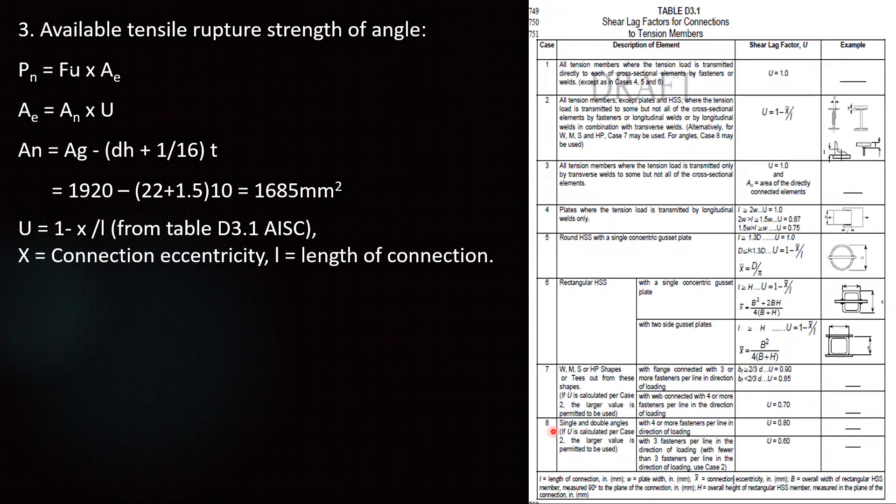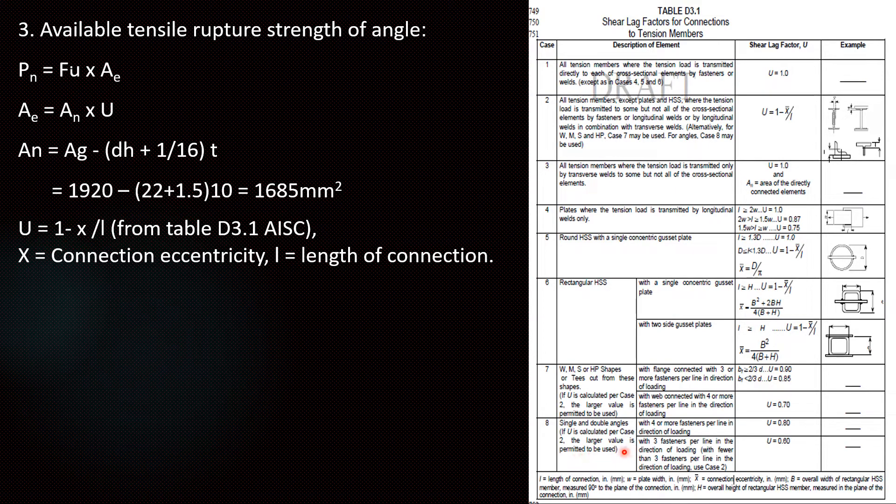For angles case 8 can also be used. Case 8 is for single and double angles. For single and double angles if U is calculated per case 2, the larger value is permitted to be used. So if you are calculating U value based on this formula as well as case 8, whichever is coming higher we can use that value. As per case 8 if bolt is 4 or more then U value is 0.8. If it is 3 or less then U is equal to 0.6.